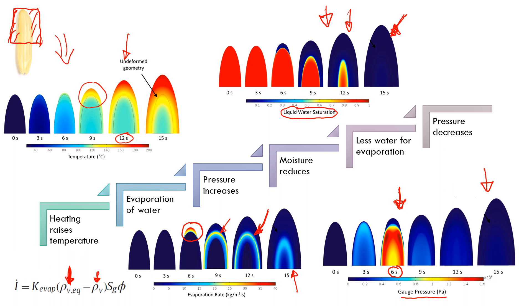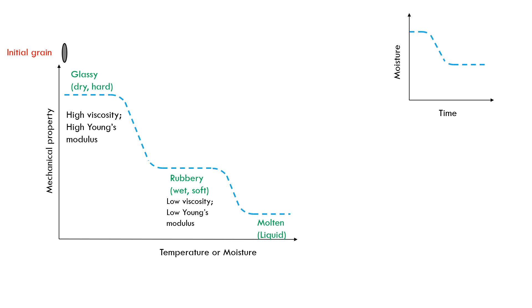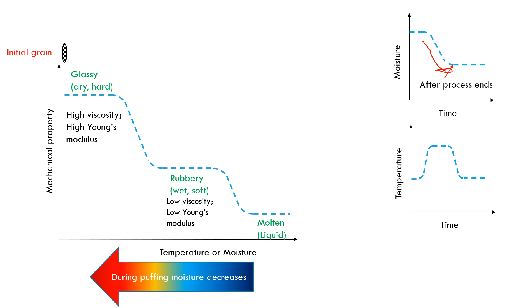Here are some additional details about the material change that is critical to the puffing process. Please look up glass transition if you are not familiar with it. During the process, the temperature and moisture changes. For the moisture, it dries out so it only goes down. For temperature, it increases first as we are heating and then it reduces as we are cooling down at the end.